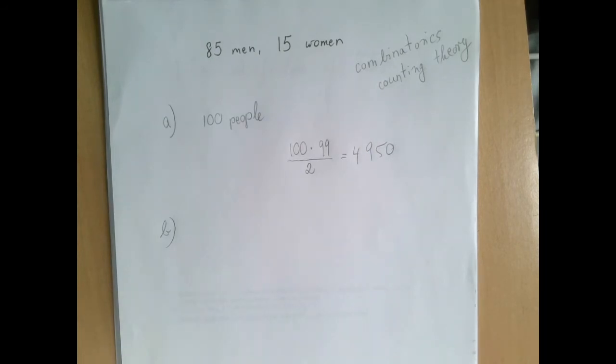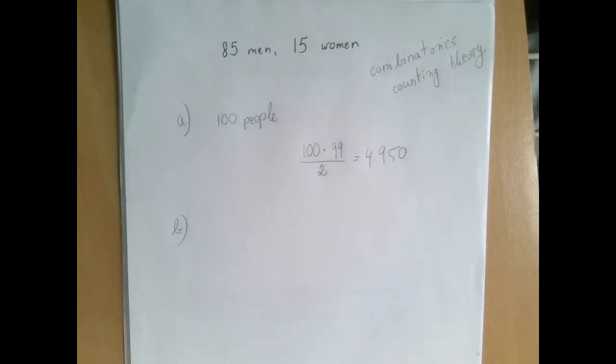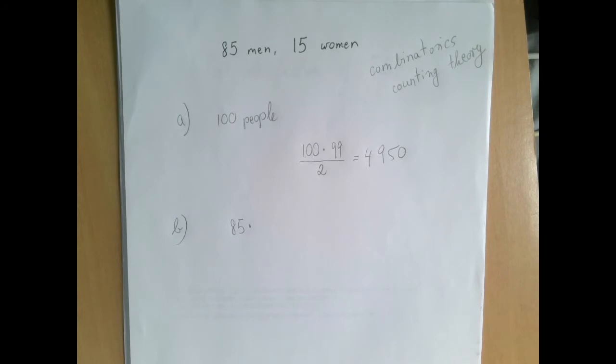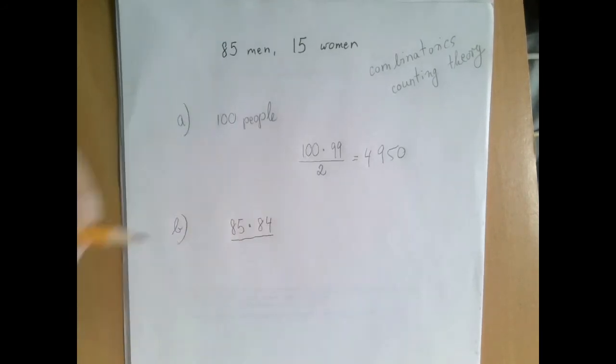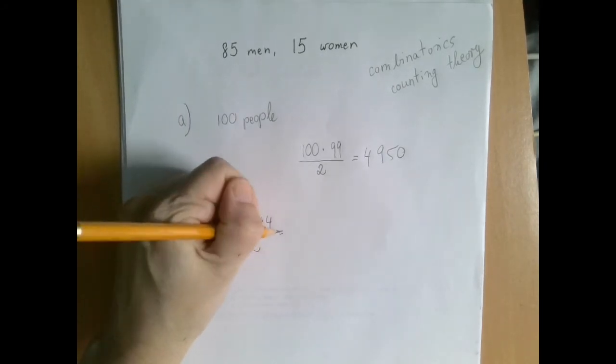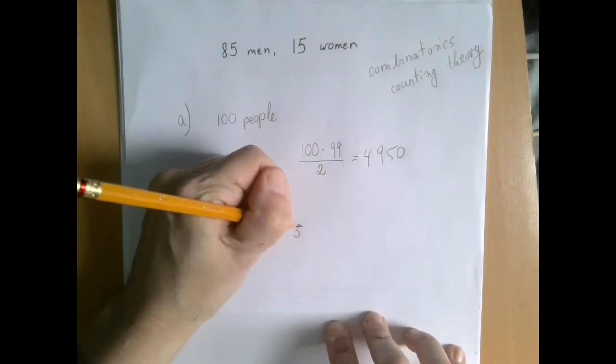So there are 85 people in the first room. How many handshakes? Well, we interview 85 people. Because no one shakes hands with themselves, each of them will confess to 84 handshakes. And we have counted every handshake at both ends, therefore, the correct answer will be half of that. So what we have is 85 times 84 divided by 2, which is 3570.